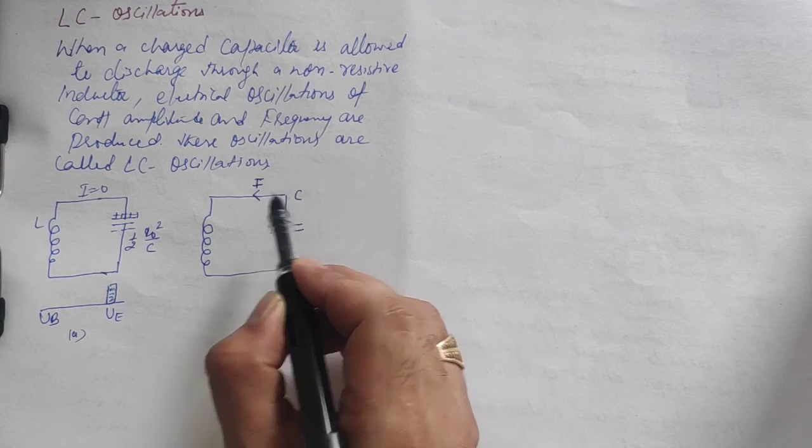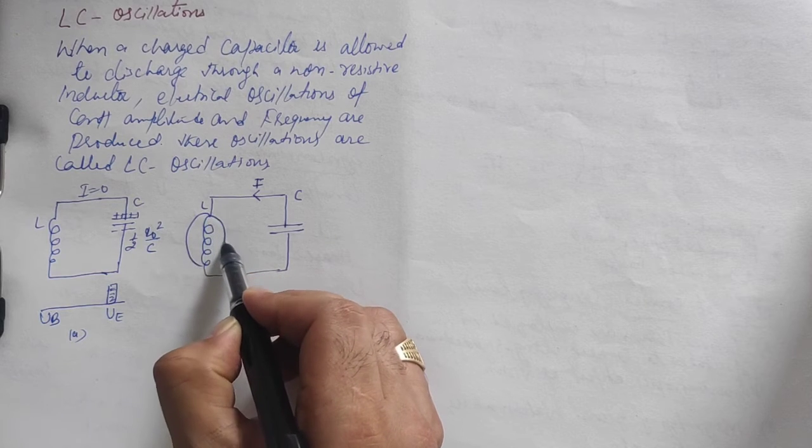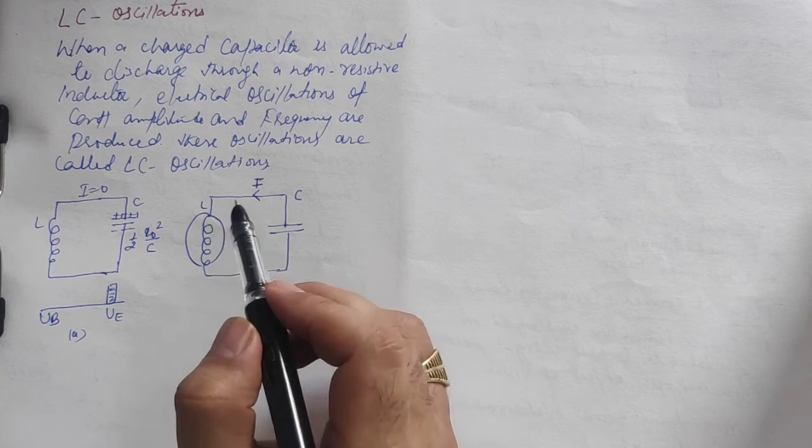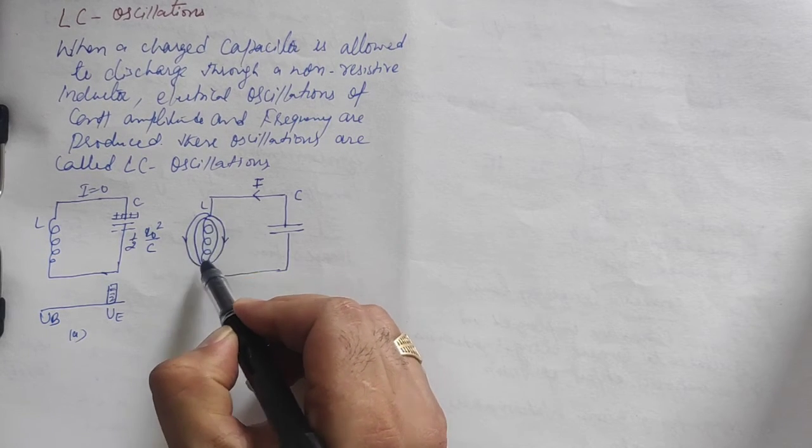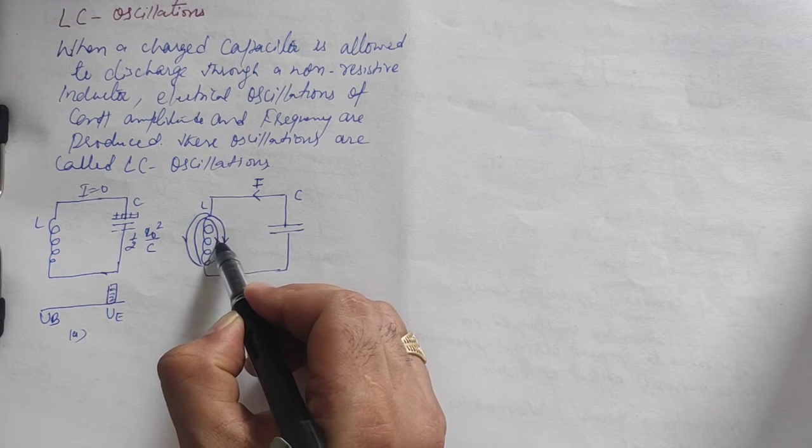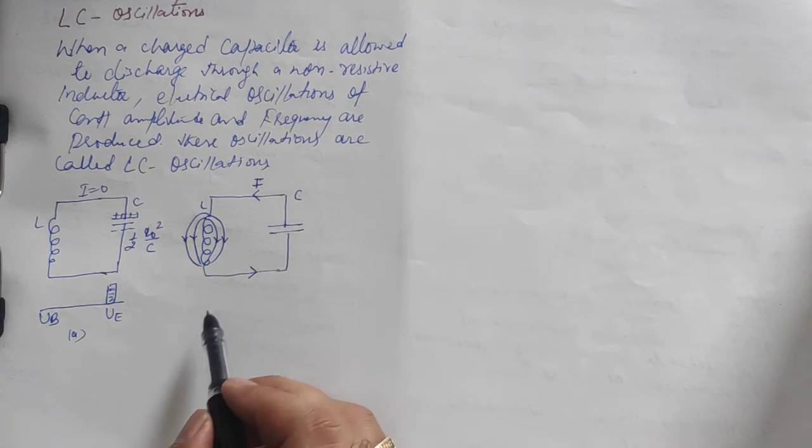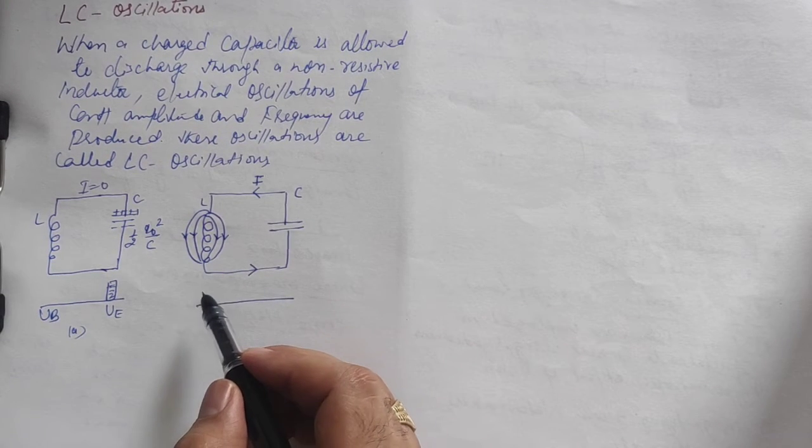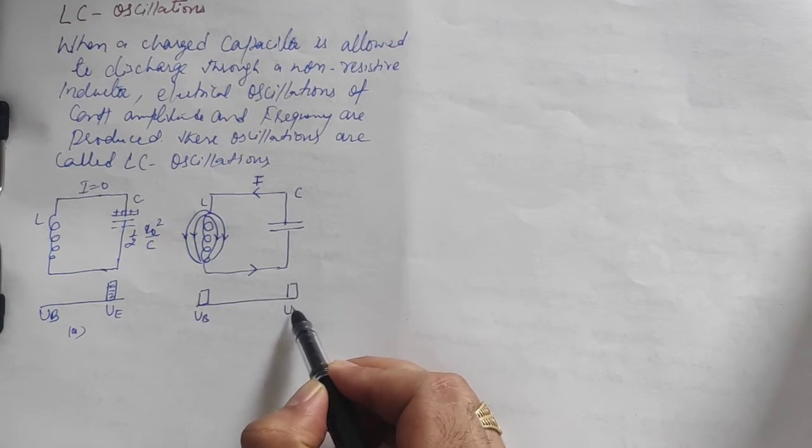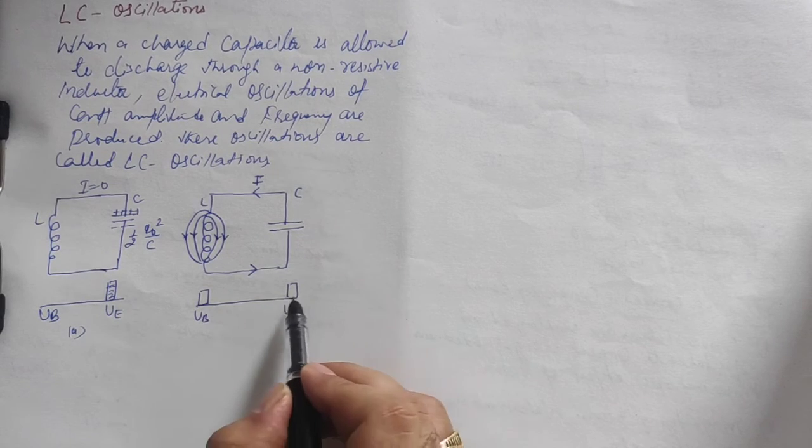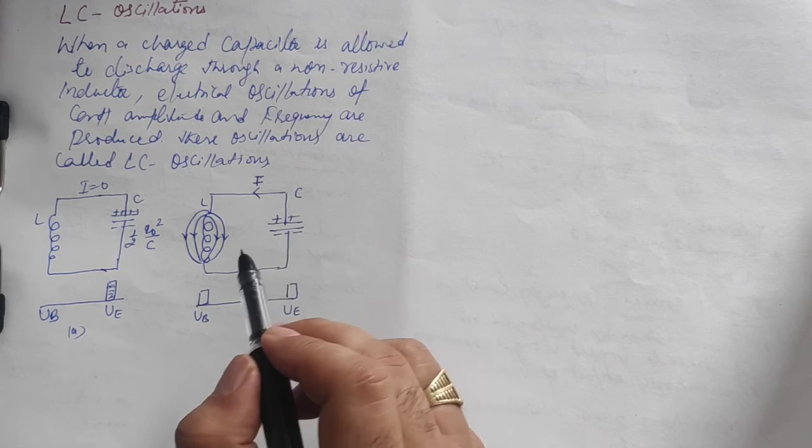In the second diagram, the capacitor starts to discharge through the inductor. Magnetic field lines flow in the inductor. Using the right-hand thumb rule, we can determine the direction. The magnetic field lines move from north to south. Current flows in this direction, and magnetic energy starts building up.